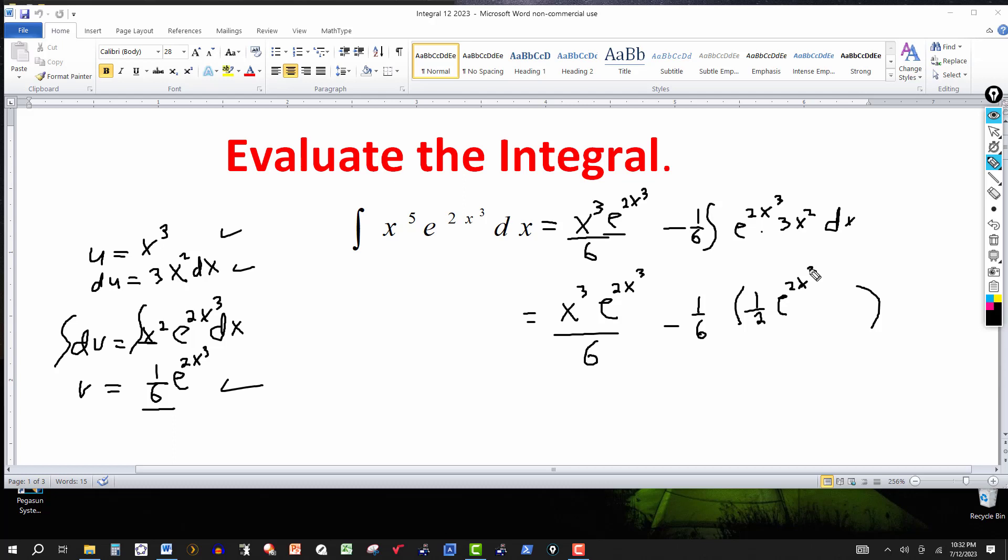Check it. Take the derivative. Let's take the derivative of this. Forget about the negative 1/6. That's outside the integral. So we take the derivative of this exponential here with a coefficient of 1 half. The derivative is the exponential, e to the 2x cubed, times the derivative of the exponent, which is 6x squared. That would give me then 3x squared.